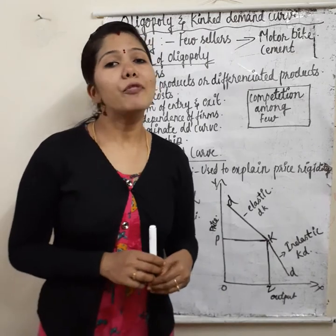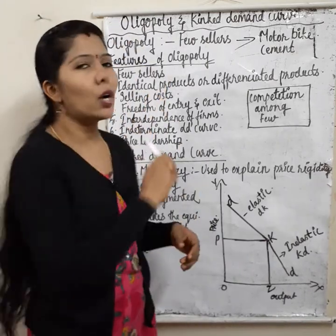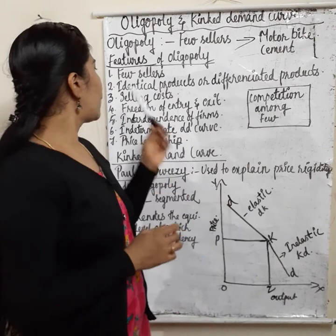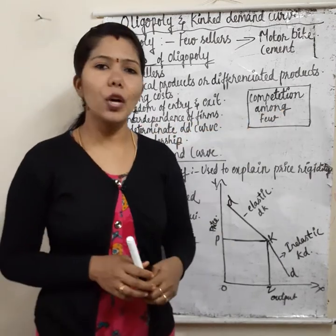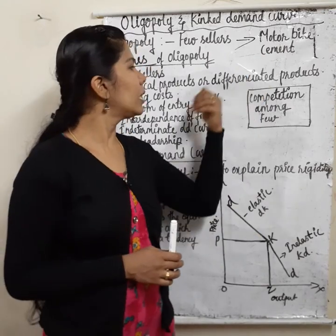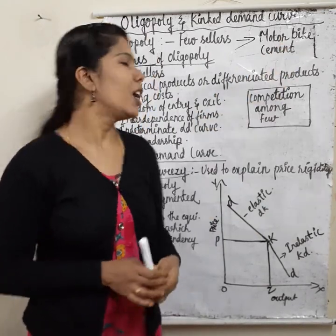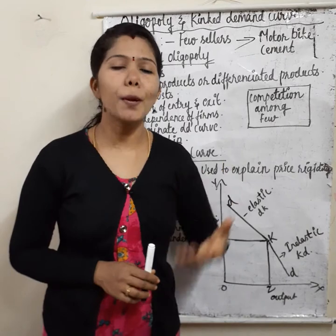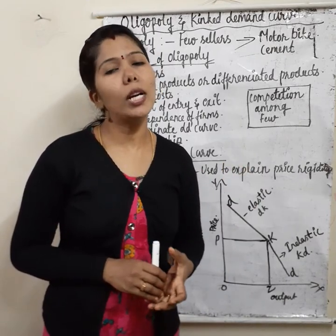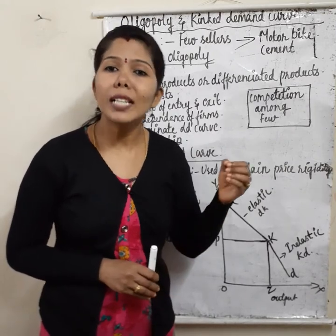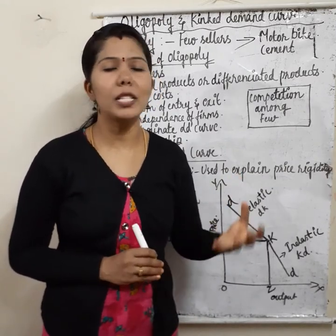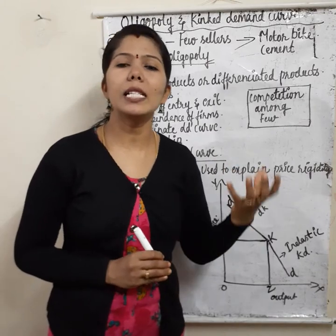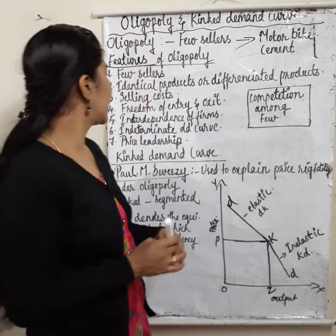Now let's learn the features of oligopoly. First: few sellers — below 10. Second: identical products or differentiated products — like cement or motorbikes. Third: selling cost — that is, advertising cost or sales promotion cost — plays an important role in oligopoly because of the competition among the few sellers. Firms have to incur selling costs, that is, sales promotion costs.